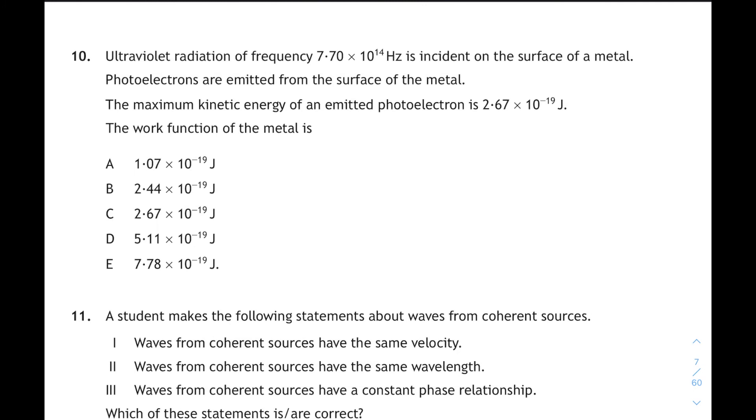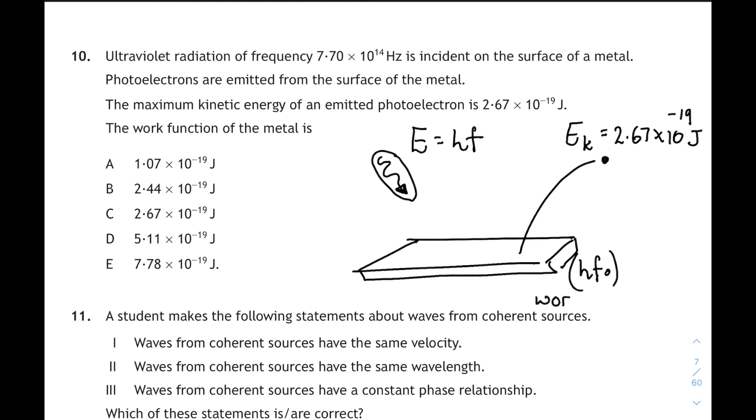Right, question 10, and we will finish with this one. Again, it's the photoelectric effect. Light with a frequency of 7.7 times 10 to 14 hertz is incident on a metal. The kinetic energy of the photoelectrons is given. Let's do a wee diagram that shows the energy of the photon, the kinetic energy of the electrons. We're asked to find the work function. The work function is HF0, that bracketed term there. Now, from your relationship sheet, we have a relationship that will allow us to work out that work function. There it is, Ek equals HF minus HF0, and it's the HF0 that we're looking for, so let's rearrange it. HF minus Ek will equal HF0, and we know the HF. Oh, we have to calculate HF.